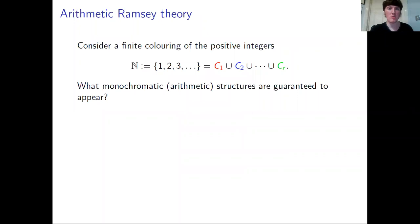I'm going to start with this quite general setup. We take the positive integers and we colour them with finitely many colours. So maybe one is red, two is red, three is blue, four is green and so on. We're going to look for monochromatic arithmetic structures which emerge — these are patterns which are all of one colour.